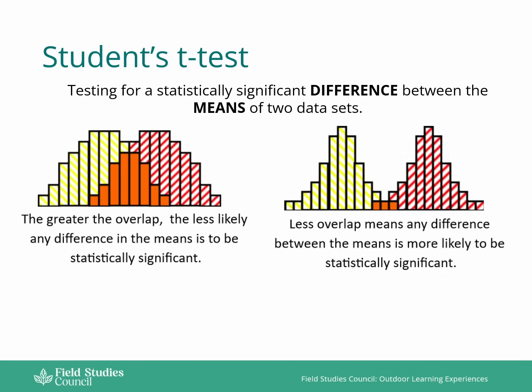The greater the overlap, the less likely any difference in the means is to be statistically significant when you take into account the whole data set. The smallest overlap means that any difference in the means is much more likely to be a statistically significant difference.